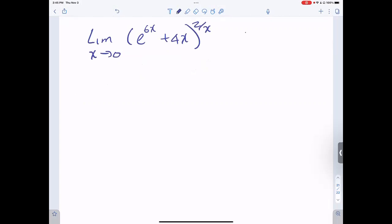And we will use the identity limits, which is: limit when x approaches 0 of 1 plus x to the power of 1 over x equals e.